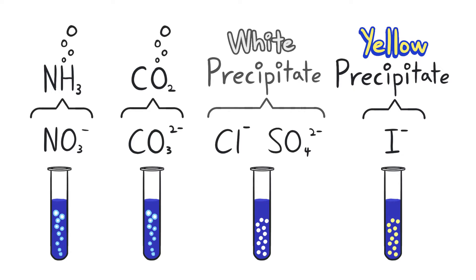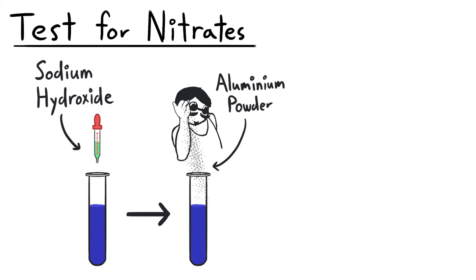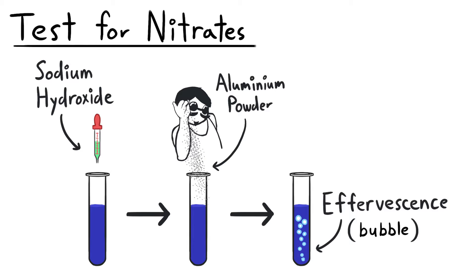Let's go into detail for each of the different anions. When testing for nitrates, we are looking for gas formations. To do that, we add sodium hydroxide and aluminum powder to the test compound or solution. When these chemicals are added, we observe bubble formations, also known as effervescence.